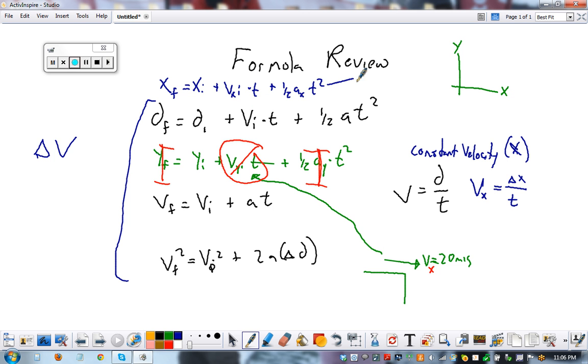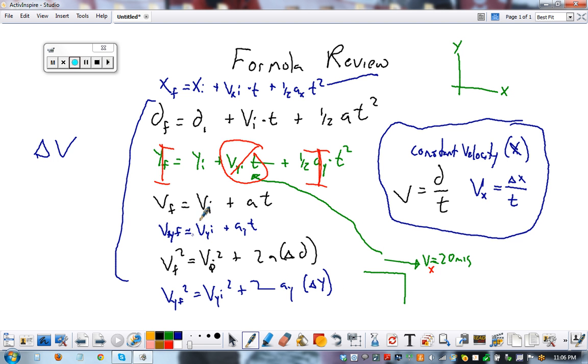But when we're talking about projectile motion, this is always true. Anytime we're looking at the forward components, we use these. Over here, it could just be velocity Y final equals velocity Y initial plus acceleration in the Y times time. Velocity in the Y final squared equals velocity in the Y initial squared plus 2 times acceleration in the Y times your change in Y displacement. So that's how all of these formulas work.